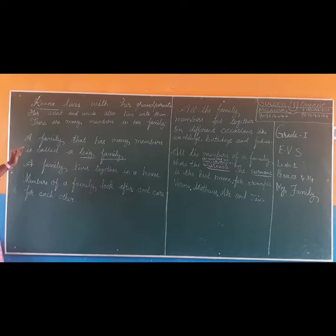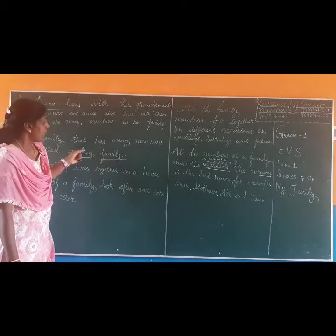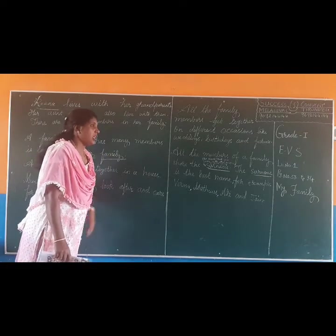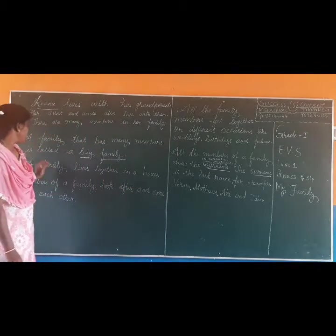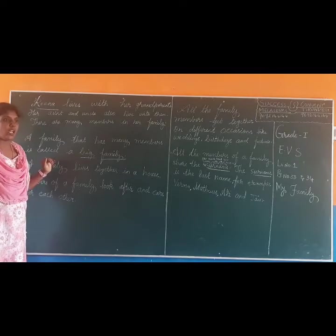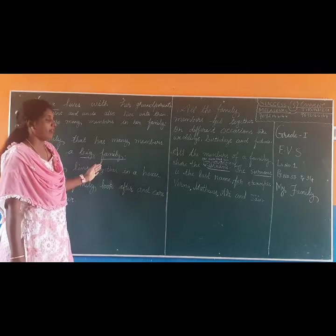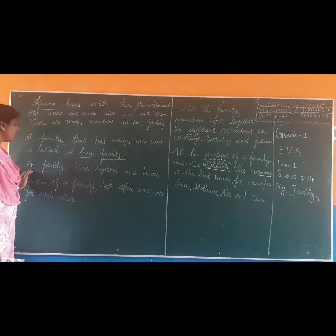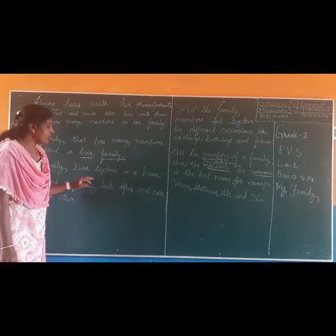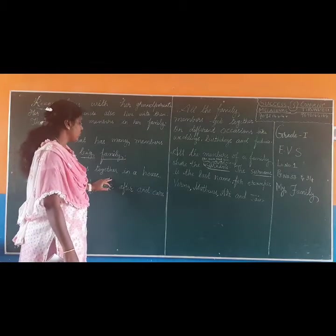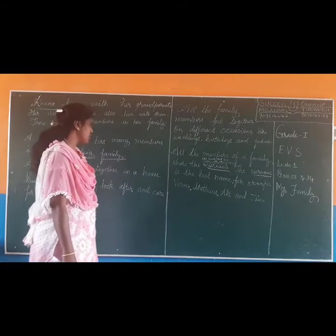A family: F-A-M-I-L-Y. That: T-H-A-T. Has: H-A-S. Many: M-A-N-Y. Members: M-E-M-B-E-R-S. Is called: C-A-L-L-E-D. A big family: B-I-G, F-A-M-I-L-Y. Full stop. A family: F-A-M-I-L-Y. Lives: L-I-V-E-S. Together: T-O-G-E-T-H-E-R. In: I-N. A house: H-O-U-S-E. Full stop.